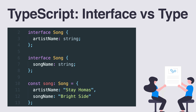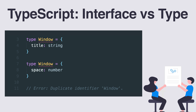Here's an example. Here we first define the song interface with a single property artist name, which is of type string. But later on, we redefine song and we add song name, a new property to this interface. If we then create a song variable of type song, we can define the properties artist name and song name as part of the interface. This is not possible with types.